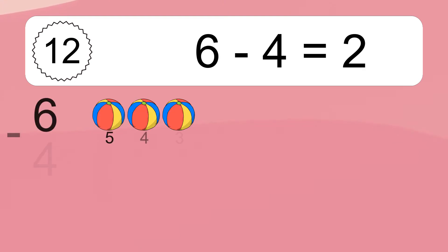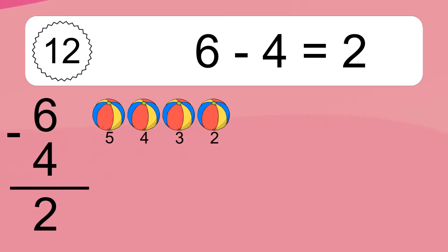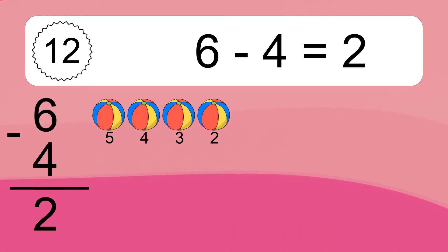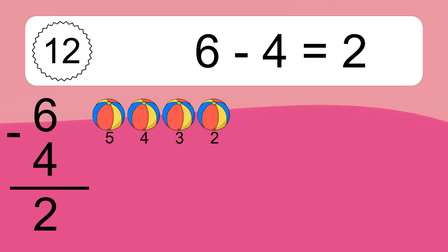6 minus 4 equals what? 6 minus 4 equals 2. Let's count it: 5, 4, 3, 2.